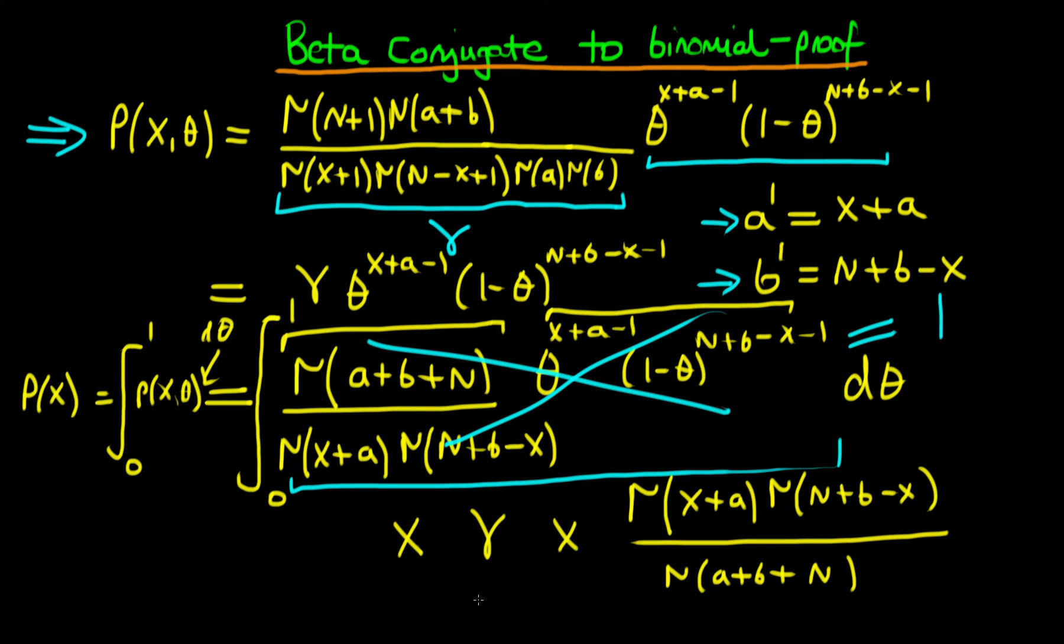So we've derived our marginal distribution of the data x here. And it actually turns out that this thing has an expression when you expand gamma for this thing which we've got up here. This is what's known as a beta binomial distribution. But the important fact is that essentially we've got our denominator of Bayes' rule. And in the next video, we're going to put this all together to help us derive the posterior density, which we hope is going to be a beta distribution.